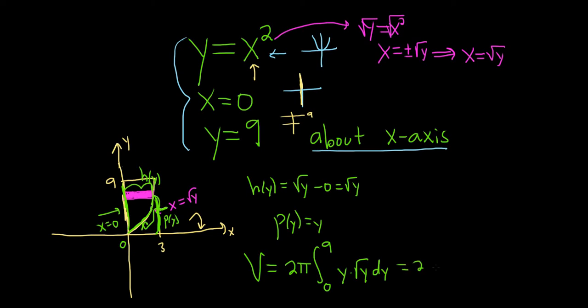So this is 2 pi times the definite integral from 0 to 9. We can rewrite the square root of y as y to the 1 half. This way, when we multiply it by y, we add the exponents. So we will get 1 plus 1 half, which is 3 halves. And then we have our dy.